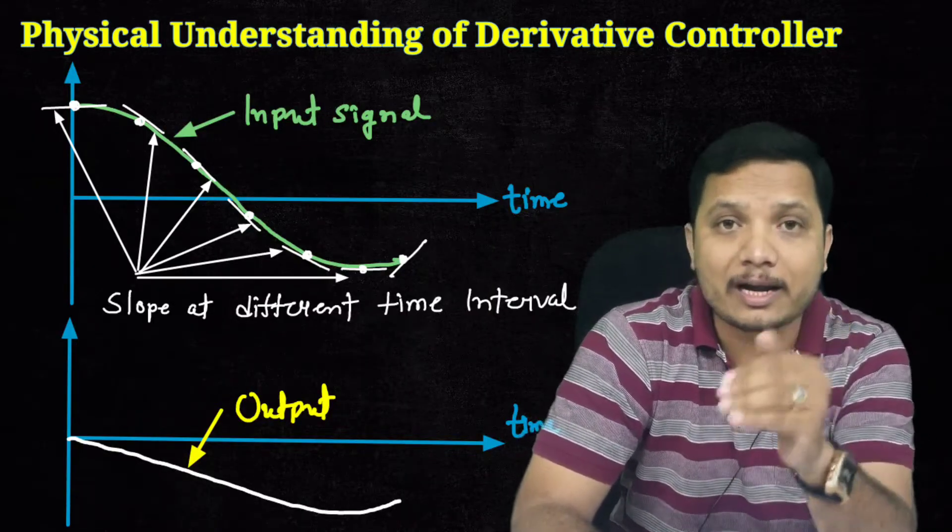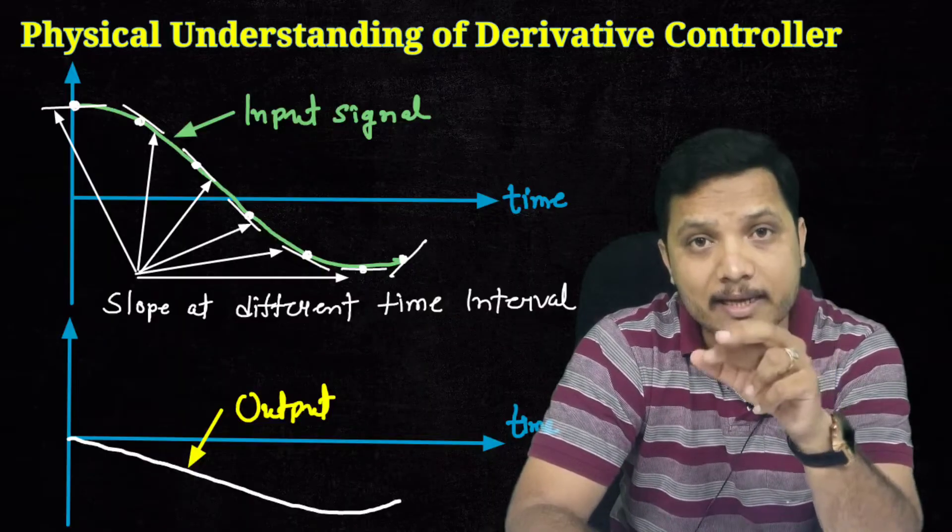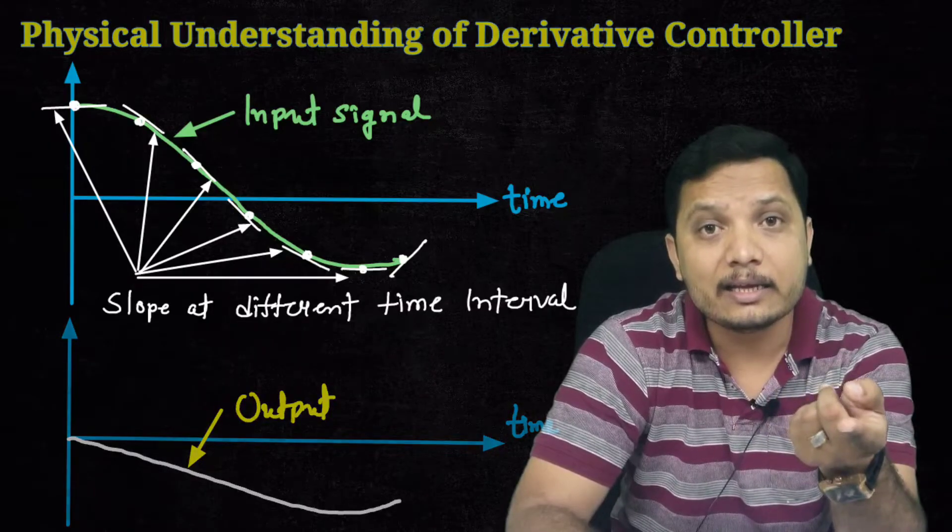There are a few important points to understand. In terms of significance, by having a derivative controller we add zeros to the system, which increases its stability. However, because we are adding zeros, we cannot eliminate steady-state error — there will always be a steady-state error, and we cannot eliminate the offset. The essential benefit is that we can increase the stability of the system. I hope you have understood this video. If you have further queries, ask in the comment box and I will be happy to reply. Thank you for watching.